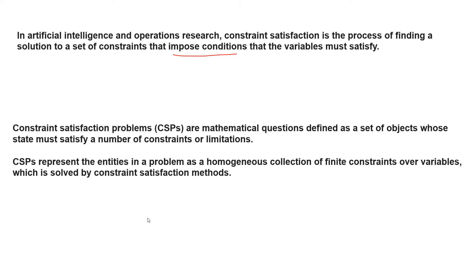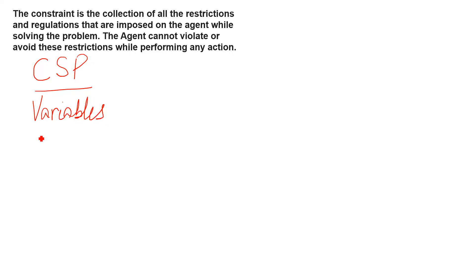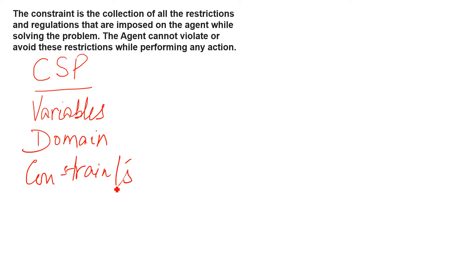I will explain it with an example. We call this CSP — Constraint Satisfaction Problems. We have to keep three things in mind: one is the variables, one is the domain, and one is the constraints. What is the meaning of constraints? Constraints mean limitations, restrictions, or rules that we have to apply.